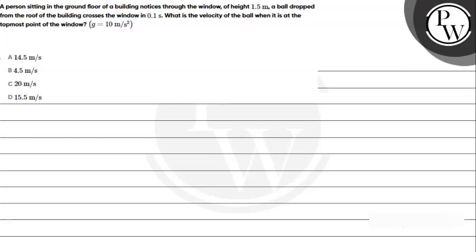Hello! Let's read the given question. A person sitting in the ground floor of a building notices through the window of height 1.5 meter a ball dropped from the roof of the building crosses the window in 0.1 second. What is the velocity of the ball when it is at the topmost point of the window? We can take the value of g as 10 meter per second square. Option A: 14.5 m/s, Option B: 4.5 m/s, Option C: 20 m/s, Option D: 15.5 m/s.